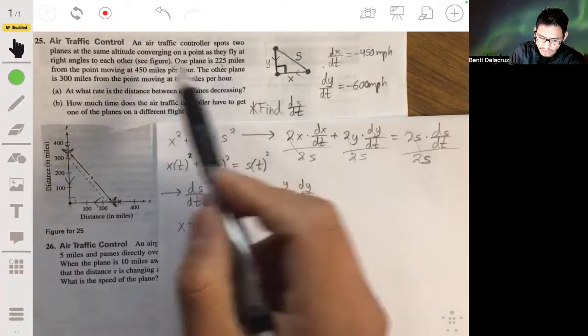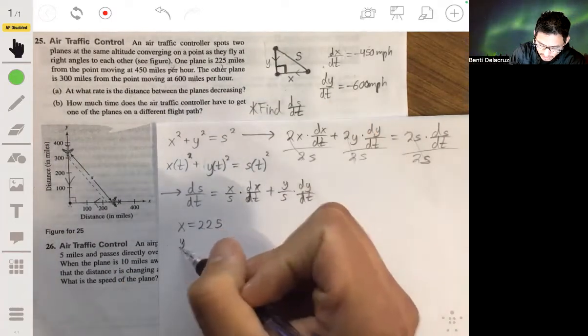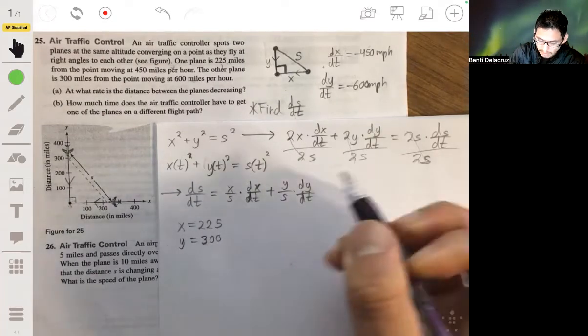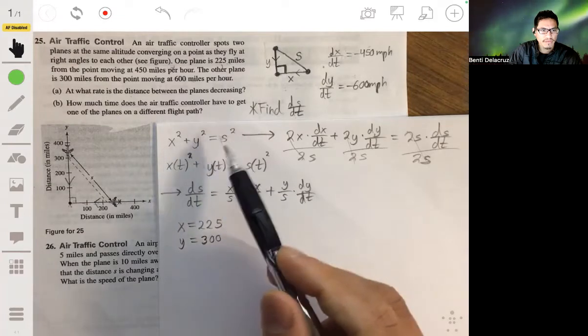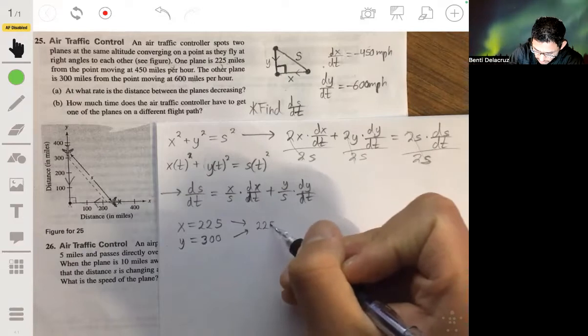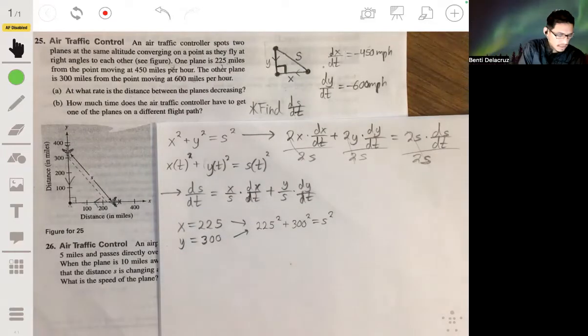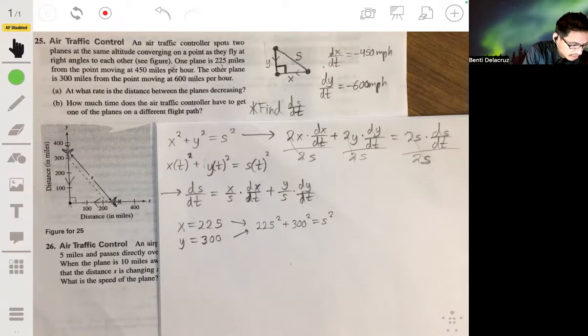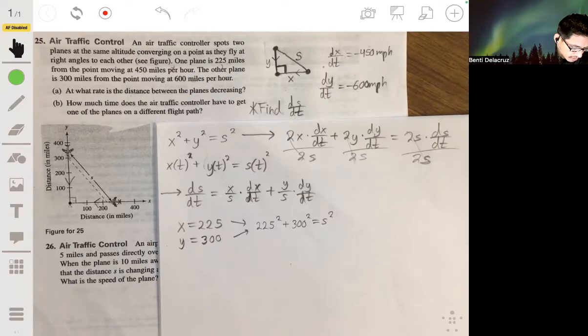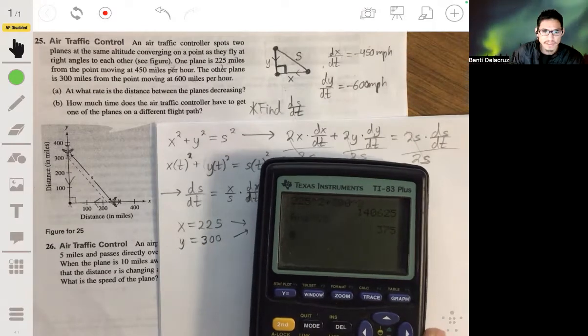And we're told that the other plane is 300 miles away, so this plane here. And that's the Y direction, so Y is 300. And then we can use the Pythagorean theorem to solve for S. We have 225 squared plus 300 squared equals S squared. We have 225 squared plus 300 squared. We have... and take the square root of that. And S is 375.